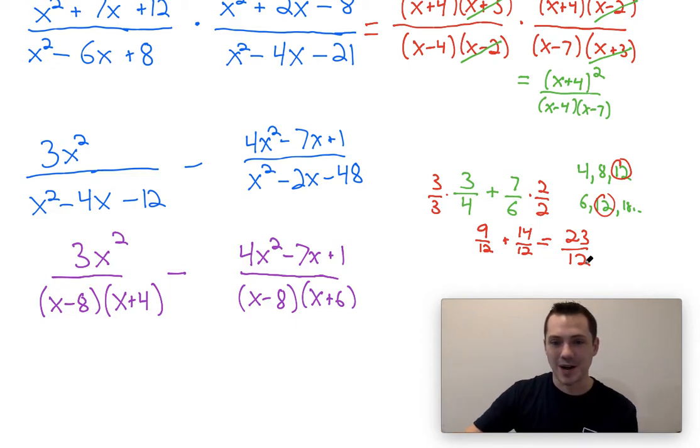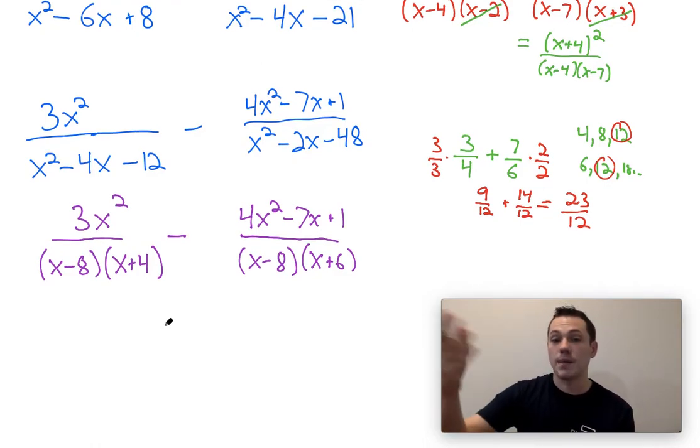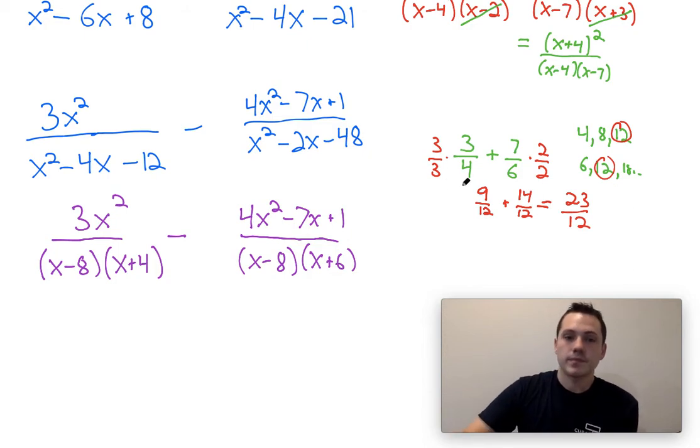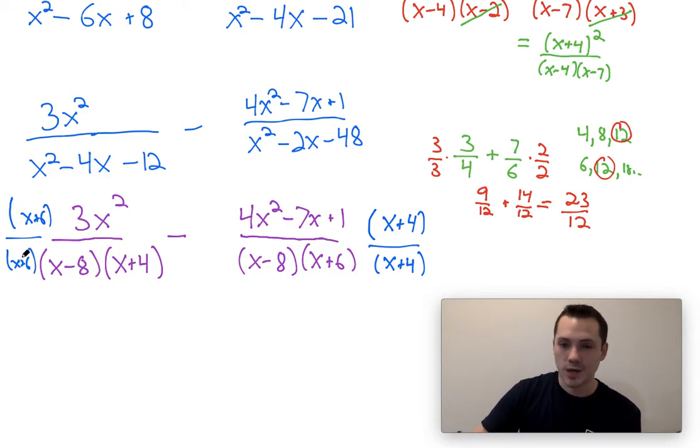Now back to rational expressions, where it seems a little bit more complicated. In order to get these two expressions to have the same denominator, let's think about what they have in common. This has an (x - 8) and this has an (x - 8), so that's good. But this one has an (x + 4) where this one doesn't, and this one has an (x + 6) where this one doesn't. So what we need to do is multiply the two sides, both the top and bottom of each of these fractions, by what's missing. I'm going to multiply this one by (x + 4)/(x + 4), just as I multiplied my regular fraction by 2/2. I'm going to multiply this one by (x + 6)/(x + 6). And then now we have the same denominator in both of these fractions.